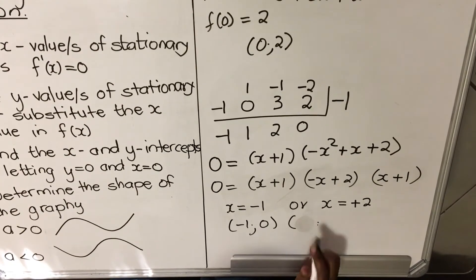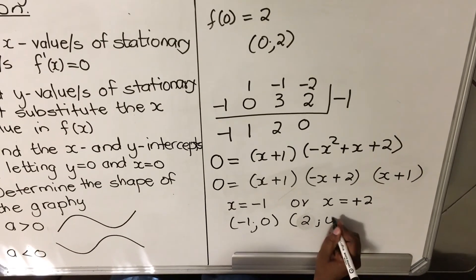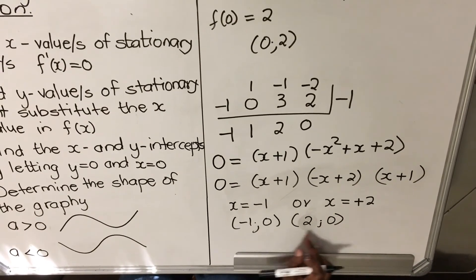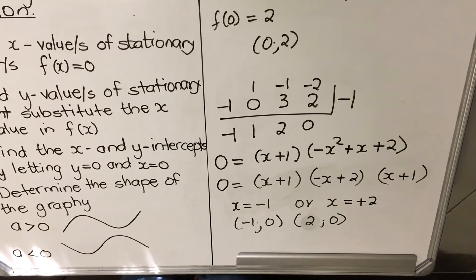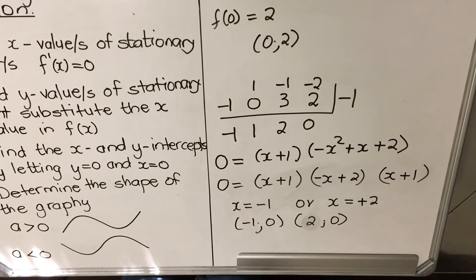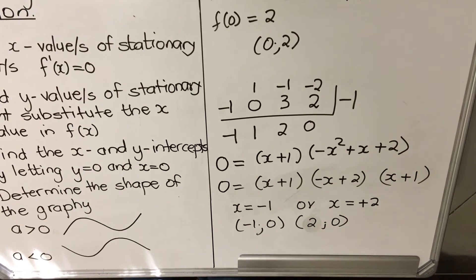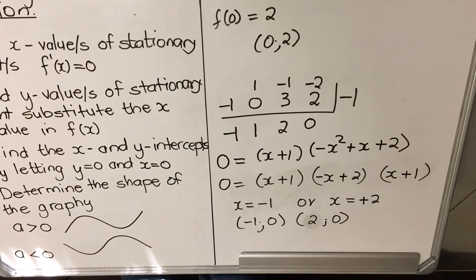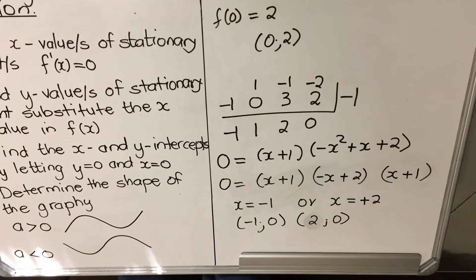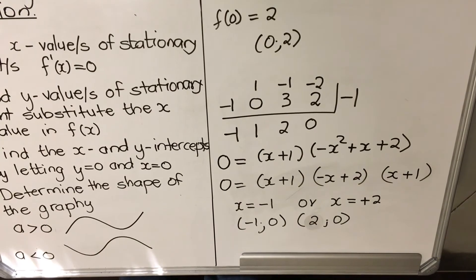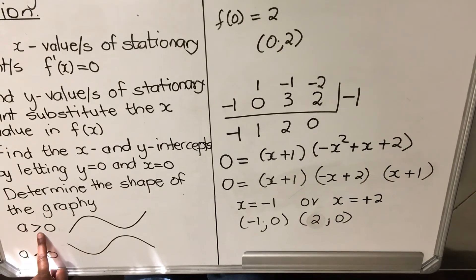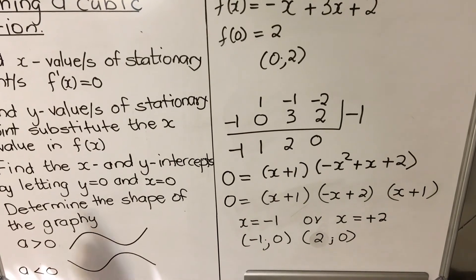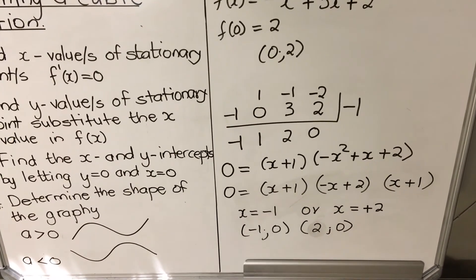Notice that one of the x-intercepts, (-1, 0), is exactly the same as one of the turning points. This means the graph touches but doesn't cross the x-axis at that point. Since our coefficient 'a' is negative, the shape of our graph starts up, goes down, then up again.